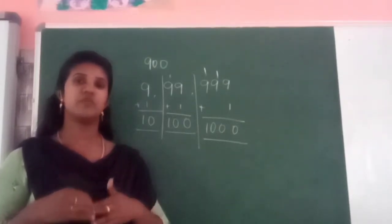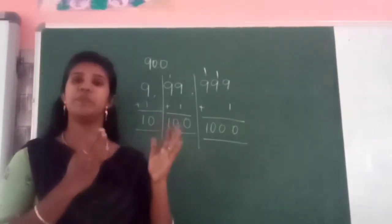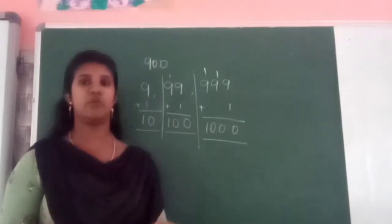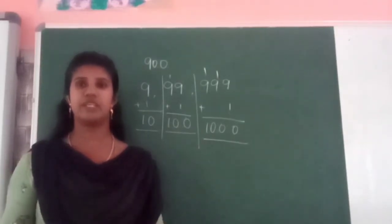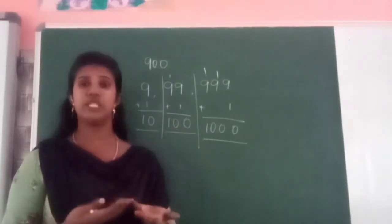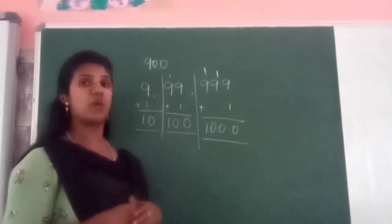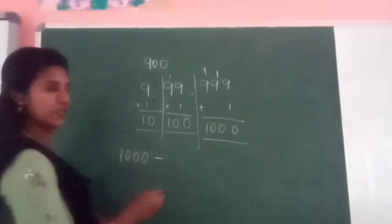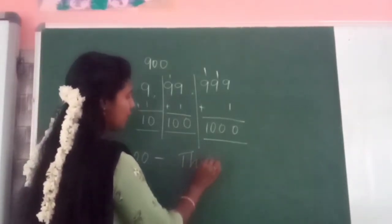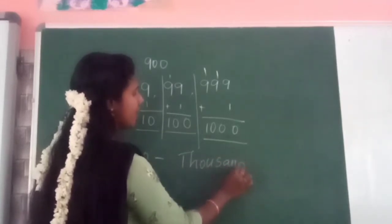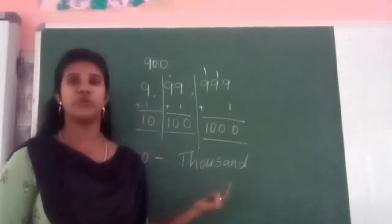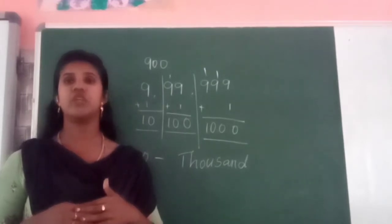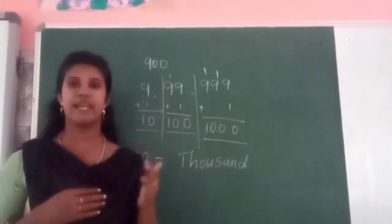Are we clear now? Today we are going to study about place values up to the 1000s place. We already know the number names. So what is the spelling for 1000? T-H-O-U-S-A-N-D — one thousand. These are the number names. If you don't know the number names, please learn them.